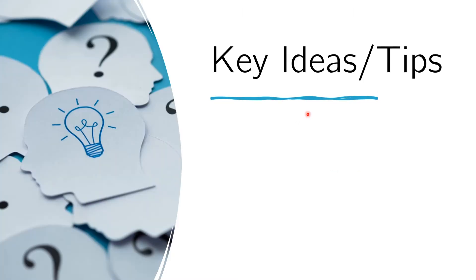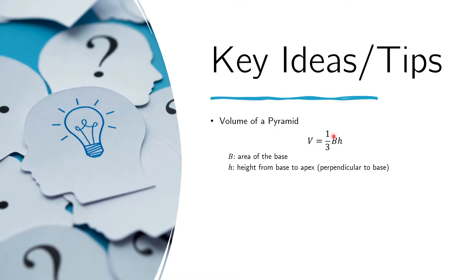Let us now review some ideas that we will use. First is the volume of the pyramid, because we are asked for the volume of the pyramid. The volume is simply one third of the base area times the height, where the height is the perpendicular distance from the base to the apex. The apex is the top of the pyramid, so the height is the perpendicular distance from the apex to the base.